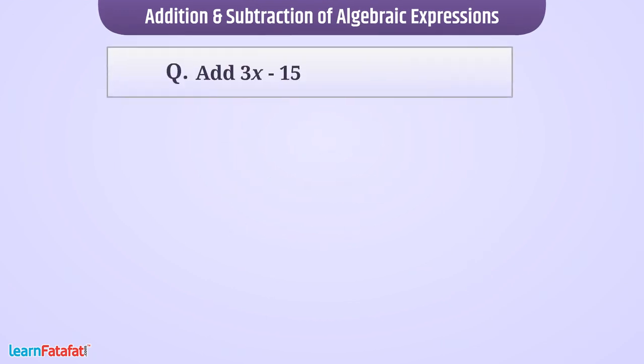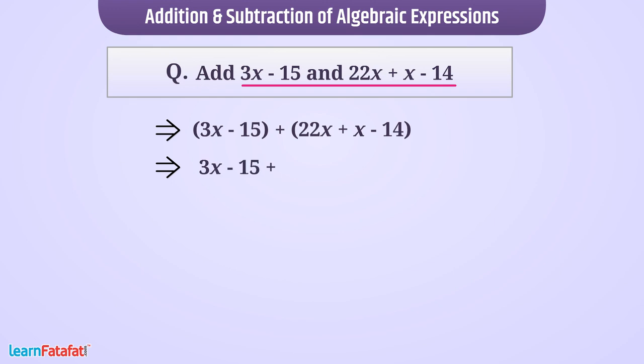Add 3x minus 15 and 22x plus x minus 14. We can write it as (3x minus 15) plus (22x plus x minus 14), that is 3x minus 15 plus 22x plus x minus 14.